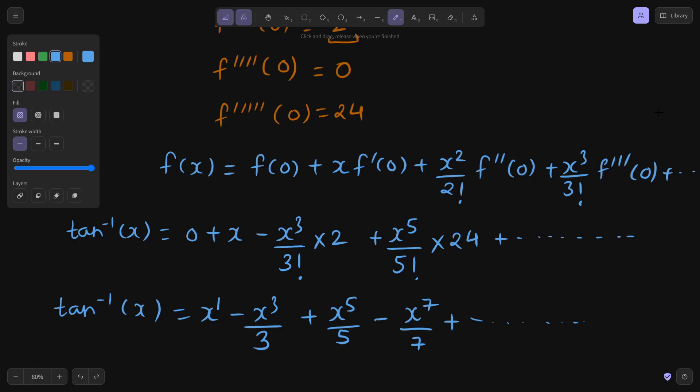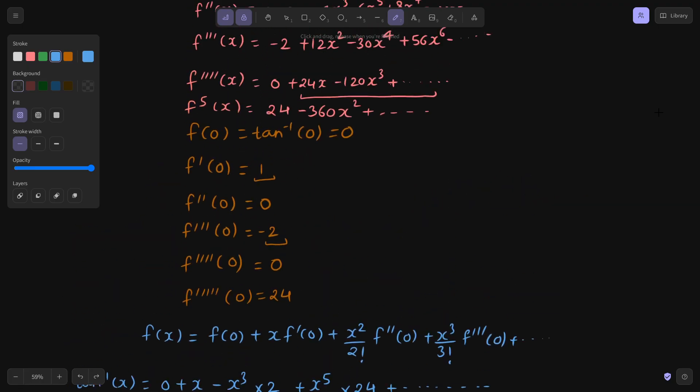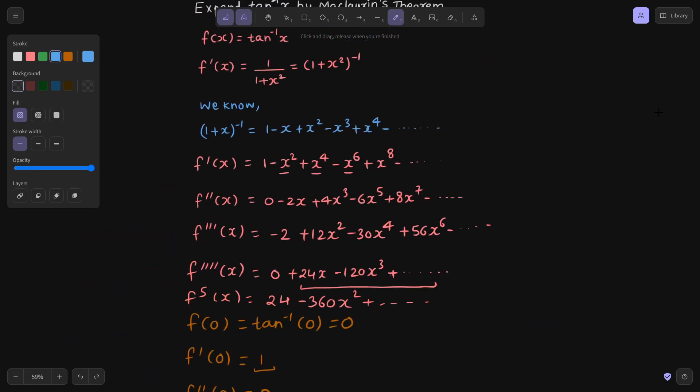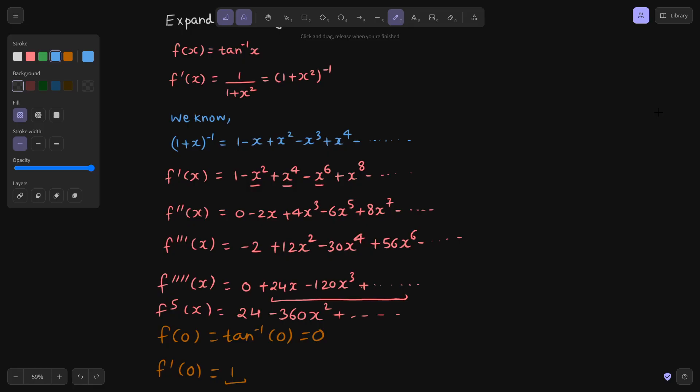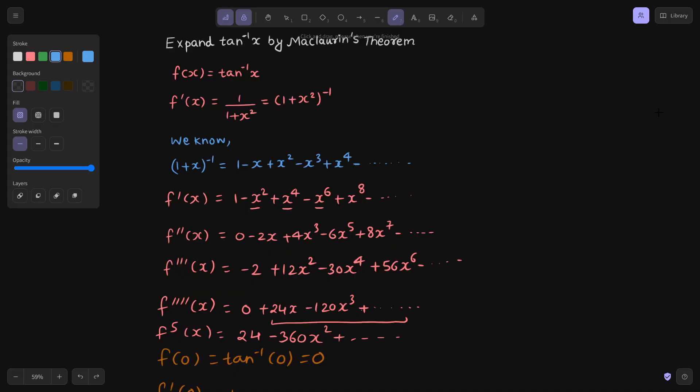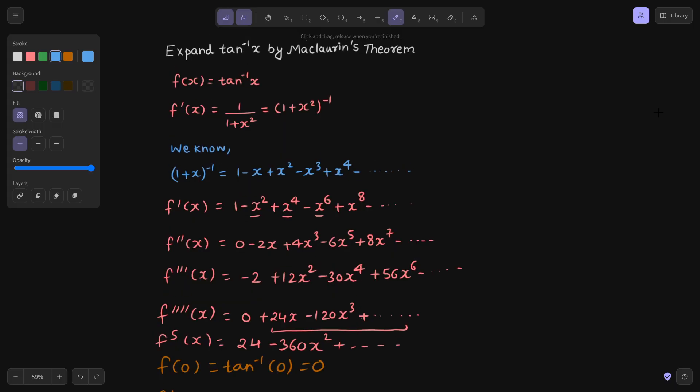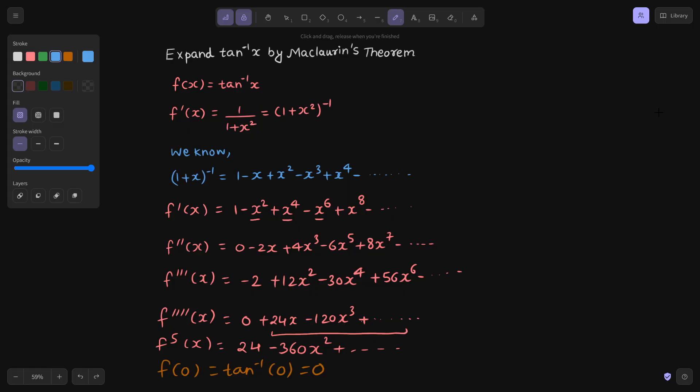So that's it for today. I think we have done it smartly enough. Otherwise we would have gone like this 1 upon 1 plus x square then finding derivative, it would have taken a bit more time. But then also if you are patient enough you would have done by that method also. You can watch out more such problems from McLaurin's and Taylor's theorem in the playlist that I am having on that also. Thanks again.